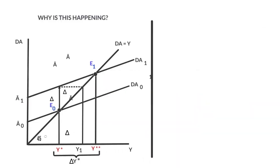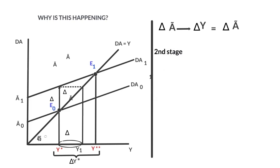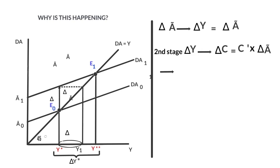Why is this happening? Initially, the increase in A leads to an increase in income that is exactly equal to the increase in A projected on the bisecting line. Yet, in the second phase, the increase in income has an increasing effect on consumption. This increase in consumption depends on the value of the marginal propensity to consume and the initial increase in autonomous expenditure.